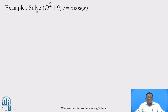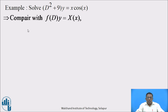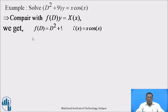Example 1: Solve the differential equation (D²+9)·y = x·cos(x). Solution: Compare with f(D)·y = X(x). Here f(D) = D²+9 and X(x) = x·cos(x).